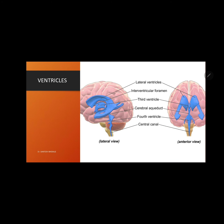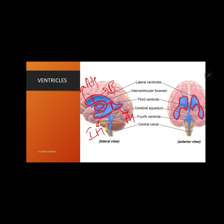On the left side you can see the left lateral view of the entire ventricular system; on the right side you see the anterior view. The C-shaped lateral ventricle is seen one in each hemisphere. It has a body and three horns: an anterior horn, a posterior horn, and an inferior horn. In the median plane you can see the third ventricle, and in the brainstem part you see the fourth ventricle.